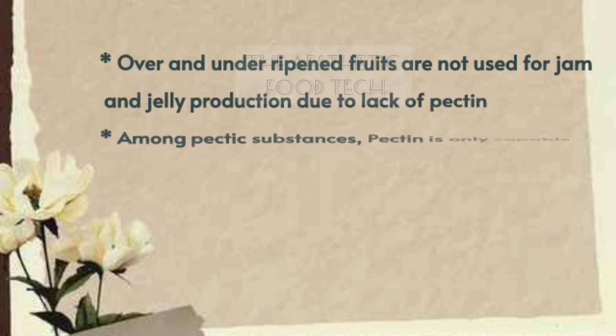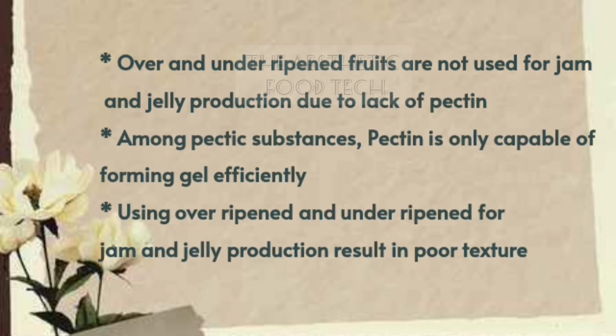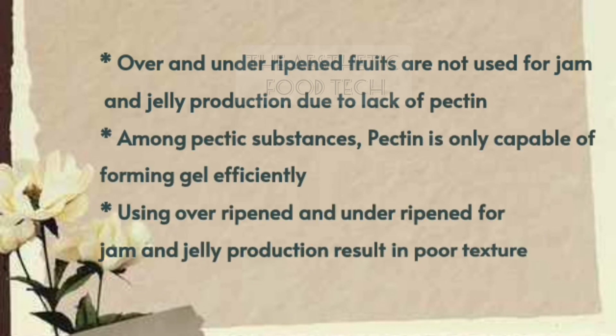There are certain key points to keep in mind. First, over-ripened and under-ripened fruits are not used for jam and jelly production due to the lack of pectin. Second, among pectic substances, pectin is the only one capable of forming gel efficiently. Finally, using over-ripened or under-ripened fruits for jelly and jam preparation results in poor texture.